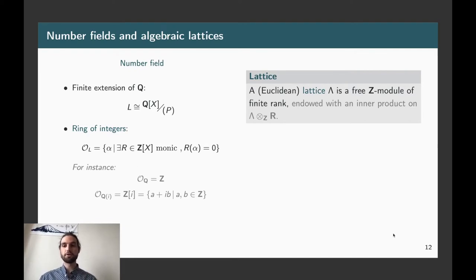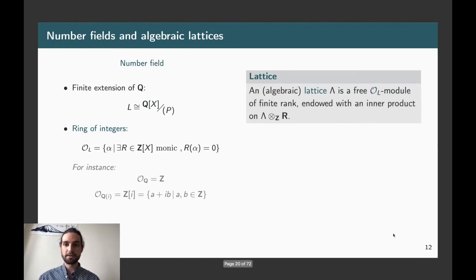Here, what you can do to generalize this notion is to change the ring over which we are considering the lattice. And in particular, if we fix a number field L, what we can do is to set as a definition of an algebraic lattice to be a free O_L module of finite rank, which is endowed with an inner product on some ambient space. And then you could say, okay, but what's the shape of an inner product on this crazy space? And I'm not entering details here, but you can define it in a canonical way using all the embeddings of your number field into C.